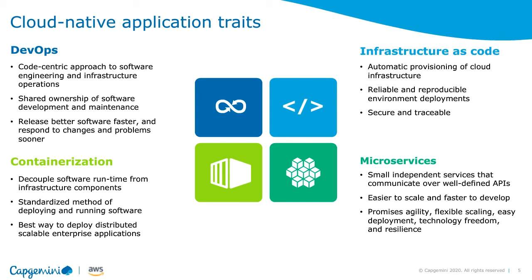One of the key developments is microservices architecture — a pattern in which large monolithic applications can be broken up into small domain-centric services. These domain-centric services can then be deployed independently from each other, giving you agility. A significant component of agility comes from being able to deliver these microservices in an independent manner.